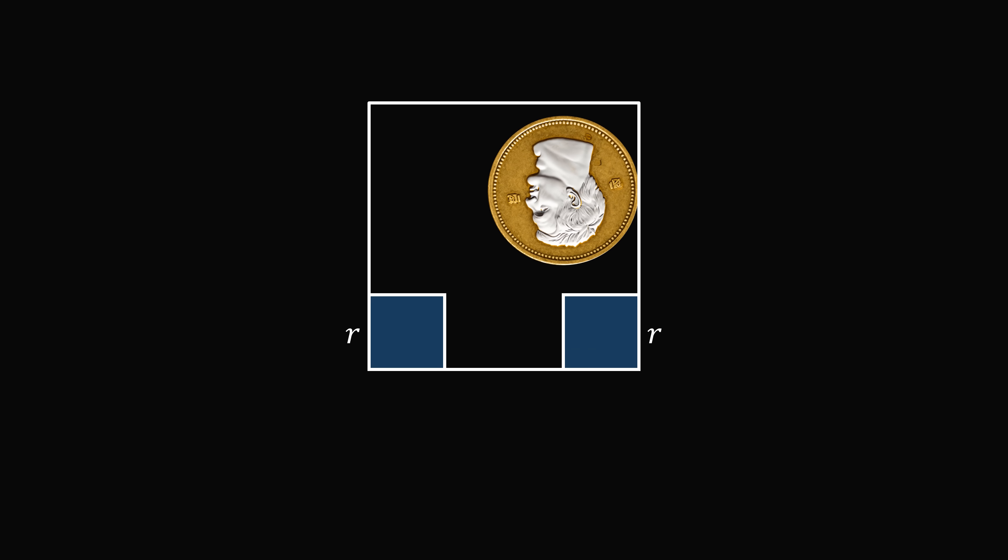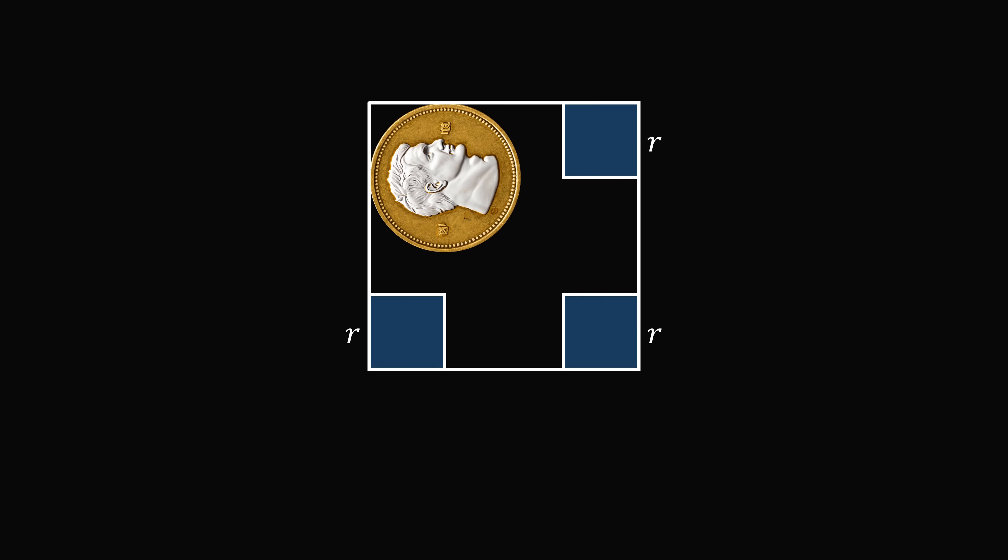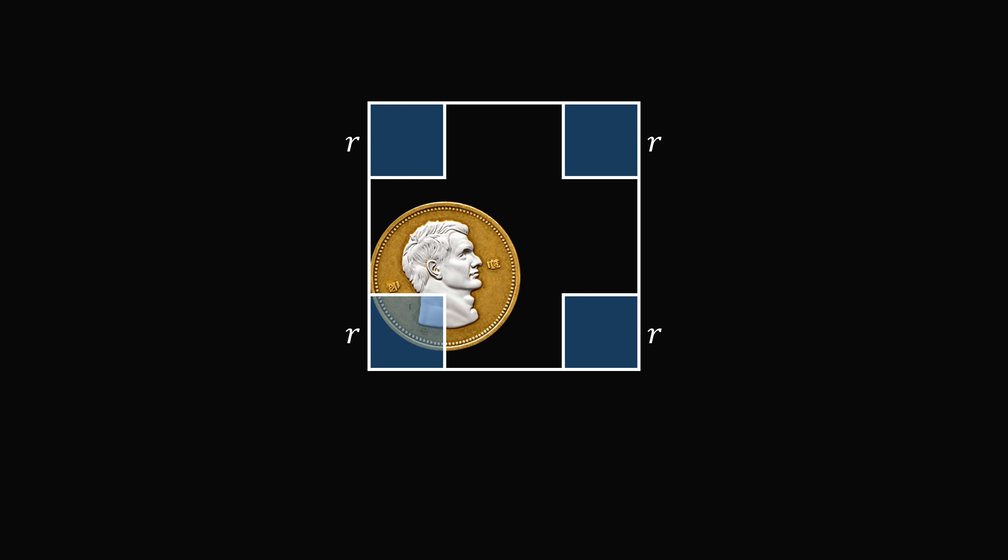Let the coin roll on the right side of the square, and we can construct another square with a side length equal to r. The coin then rolls on the left side of the square, and returns to its starting position with one whole revolution.